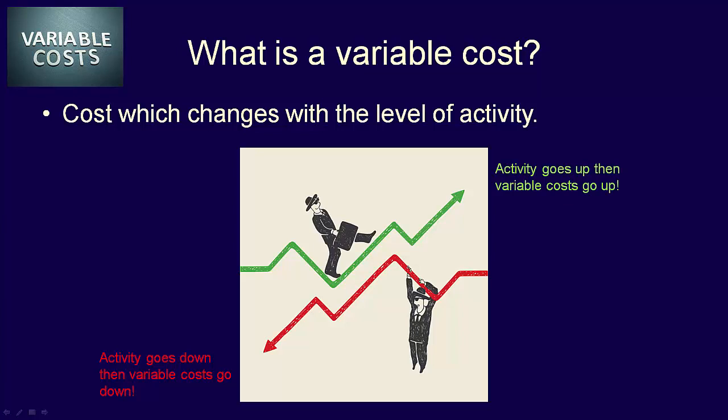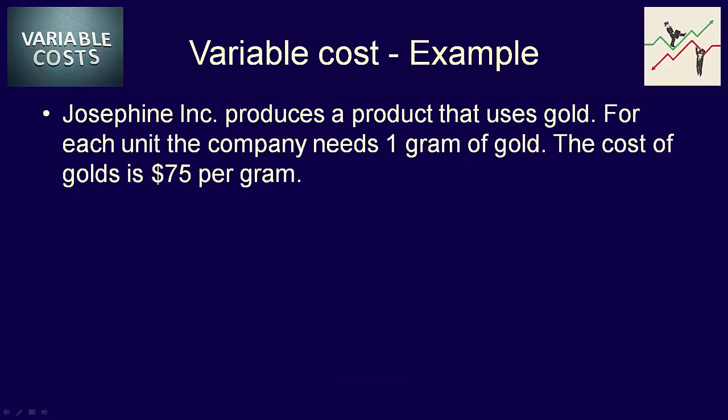Let's use an example to demonstrate variable costs. Josephine Inc. produces a product that uses gold. For each product, the company needs one gram of gold. The cost of gold is $75 per gram. Is gold a variable cost in the production of the company's product?